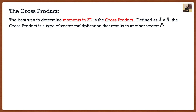This is where something called the cross product comes into play. I want you guys to always think of 3D moments and cross product together. The cross product is defined as a vector A crossed by a vector B, and the result is another vector — that's the first key thing here: the result is another vector.